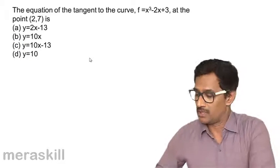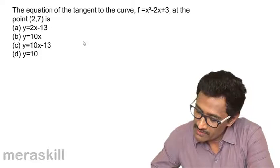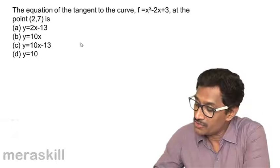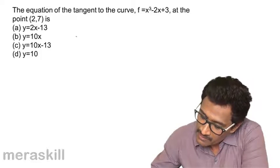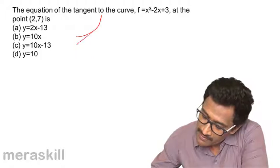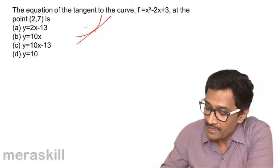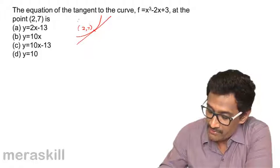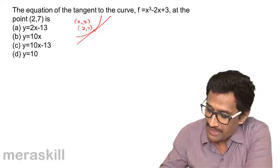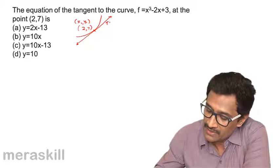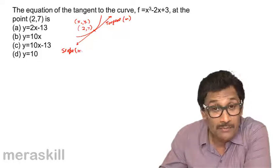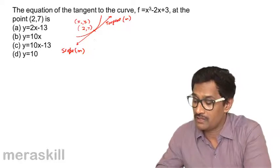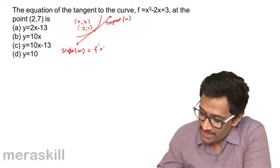We have the equation of the tangent to the curve y = x³ - 2x + 3 at the point (2, 7). Suppose this is the particular curve and this is the tangent. We need to find the slope m. The slope of any tangent equals the gradient of the curve, which is f'(x) = 3x² - 2.